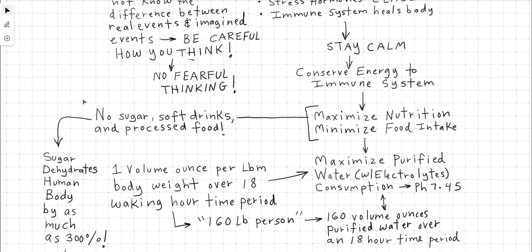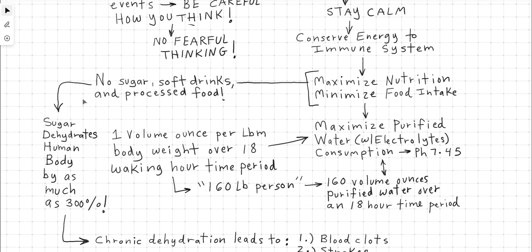Another point here in the lecture is, where applicable, avoid sugar and soft drinks and processed food because there's only so much oxygen that you can intake into the body to convert the sugar into caloric energy. In doing so every sugar molecule requires three molecules of water to do so in order to store enough oxygen to fire those sugar molecules off. So sugar by itself will dehydrate the human body by as much as 300%. Rule of thumb: consume one volume ounce of purified water per one pound of body weight over an 18 hour period. So if 160 pound person needs to consume 160 volume ounces of water over an 18 hour period, this equates to about nine volume ounces per hour.